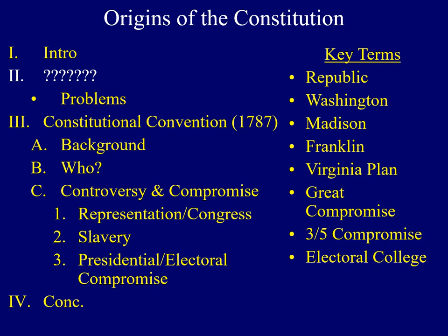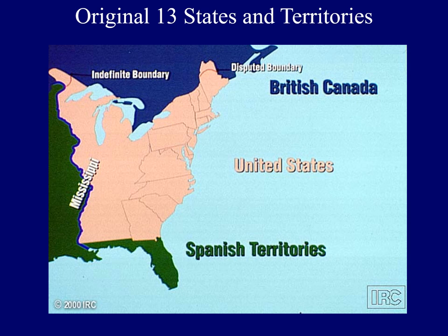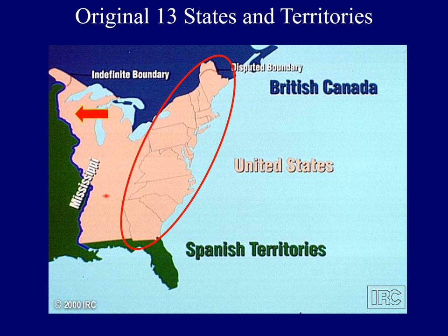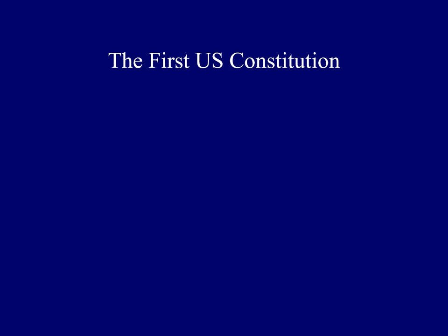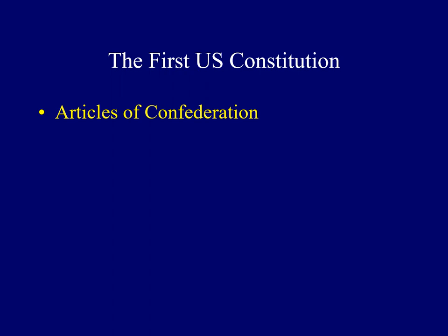I'd like to begin by talking about the first Constitution of the United States and some of its problems. This map identifies the land included in the original 13 states and territories at the end of the American Revolution. Notice the area in pink on the right — the eastern seaboard — those included the first 13 colonies that eventually became states. U.S. territory actually expanded all the way to the Mississippi River. In order to provide enough unity for those 13 colonies that were fighting to become states, they got together and developed the first Constitution of the United States. The name of that Constitution was the Articles of Confederation.